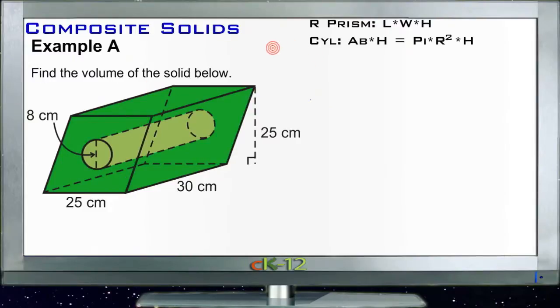What I did was go ahead and pull in our formulas here. The formula for the volume of a rectangular prism is just length times width times height. And then the formula for the volume of a cylinder is the area of the base times the height, or pi r squared, which is the area of the base, times the height.